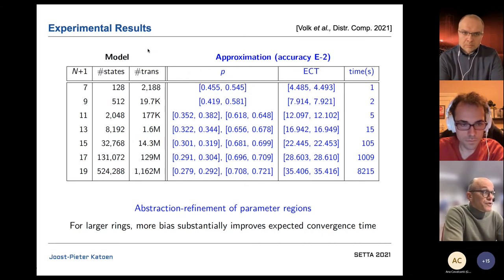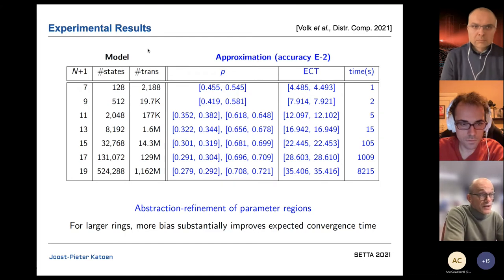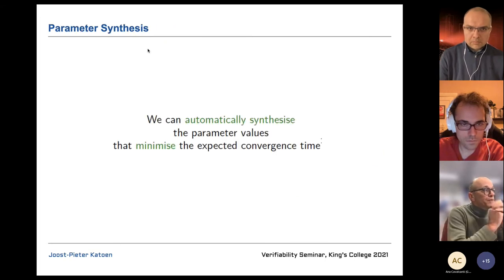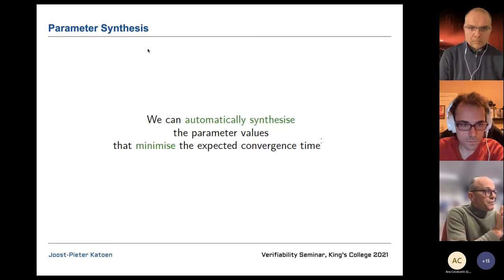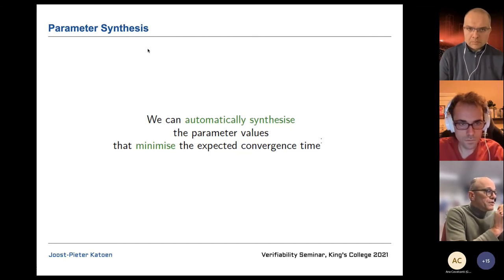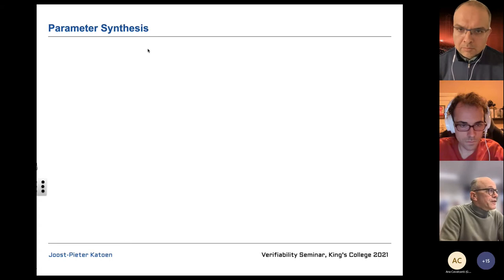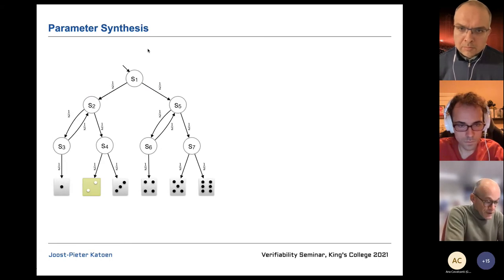This is not solving a model checking problem — you're solving a synthesis problem: what is the optimal value for a specific property, in this case the expected number of steps until convergence. The state of the art is that you can automatically synthesize parameter values for a given property. This is a step beyond model checking toward parameter synthesis. But in this talk, I want to go further and also synthesize topologies — synthesize the control structure itself.